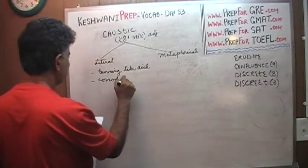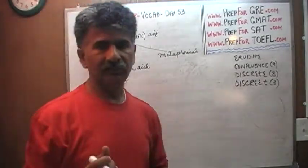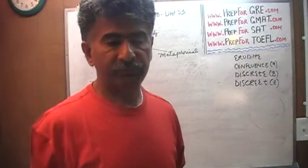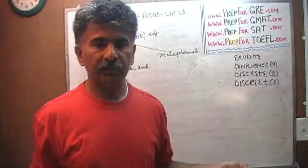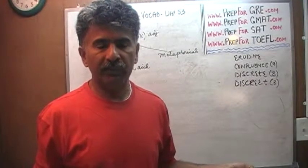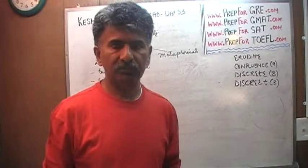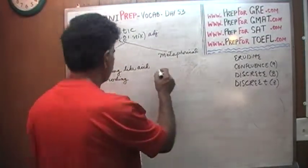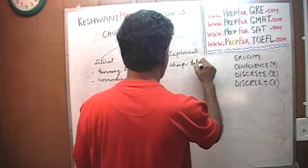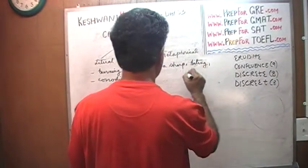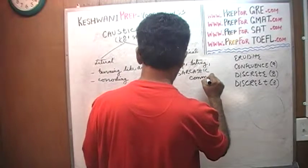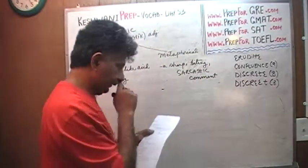Something that burns like acid is called caustic. And therefore, you can make a caustic comment. To make a caustic comment means that you make such a sharp, biting comment that the person it's directed towards finds it almost burning — like you poured acid on their body. It's so sharp, so discomforting, it's a sharp, biting, sarcastic comment.